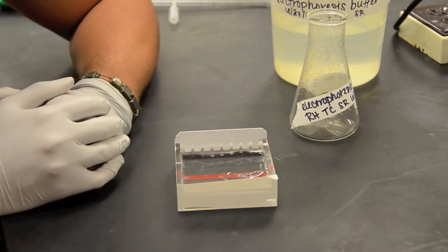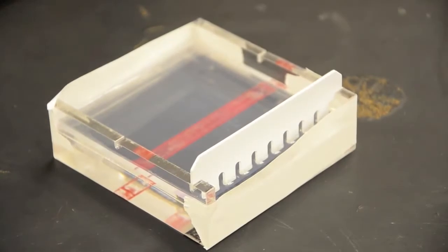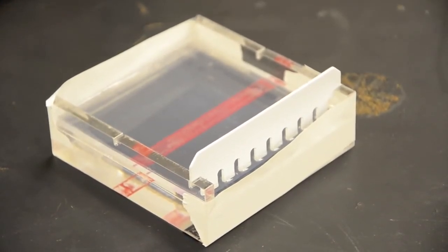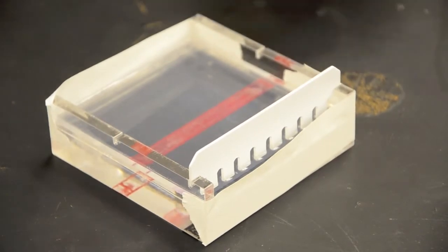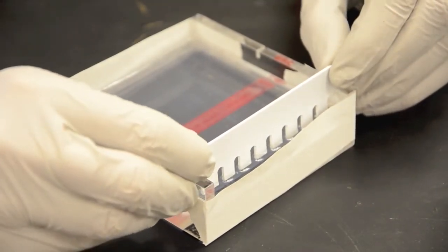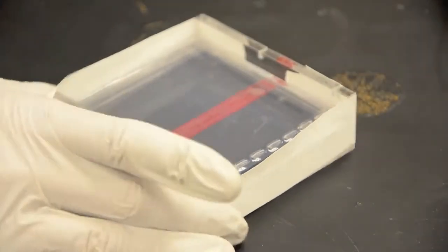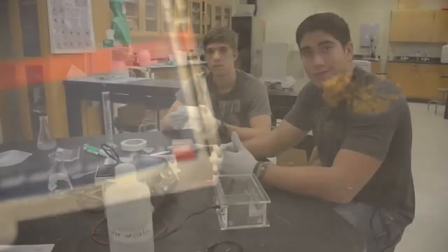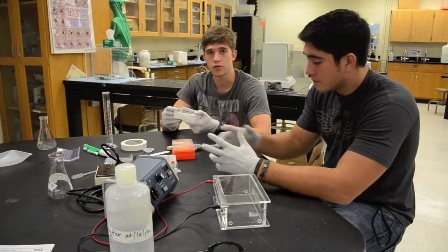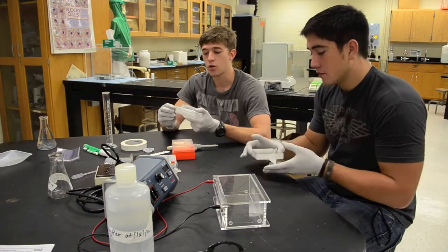Okay so after the gel has solidified in the gel bed the next step will be to remove the comb which will create your wells. Now you're going to do this very carefully with two hands, make sure you do it very evenly and here we have our wells.